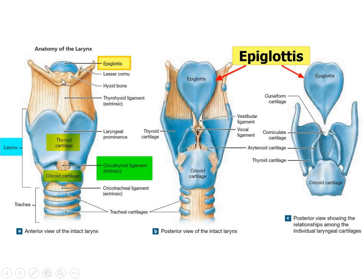The hyoid bone has a central body with two cornua. It is the only bone with no muscle insertion.